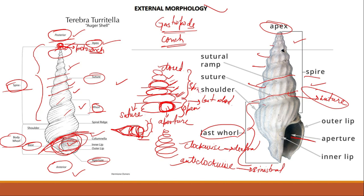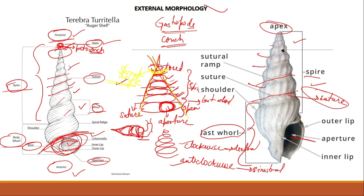The sides of the spire converge towards each other near the protoconch. The angle between these two sides is known as the spiral angle. That covers the external morphology of a gastropod shell, which is also known as a conch.